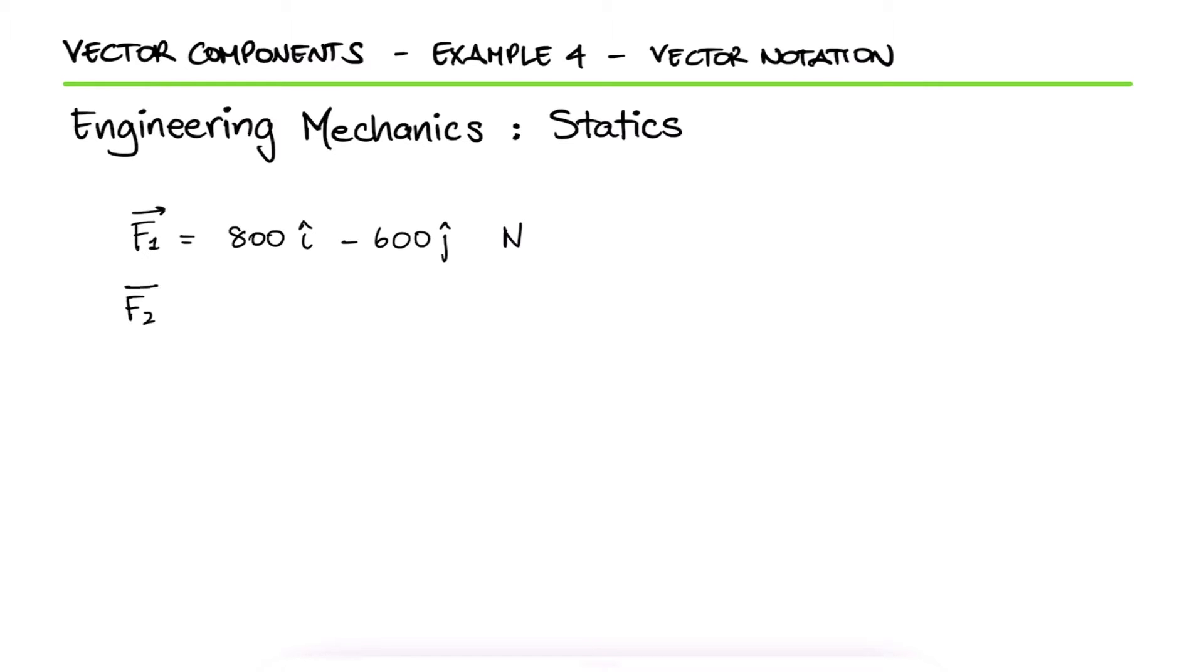For the given vectors that use the unit vector notation, what is the resultant force, its magnitude, and the angle that it makes when measured from the reference direction i?